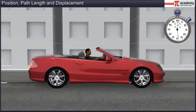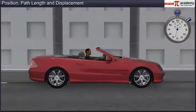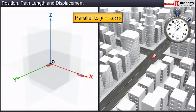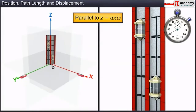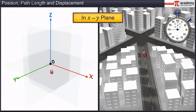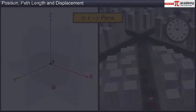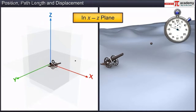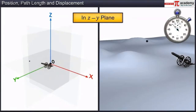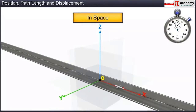The motion of a body with respect to the frame of reference could be parallel to the X axis, parallel to the Y axis, parallel to the Z axis, in the XY plane, in the XZ plane, in the ZY plane, or in space.